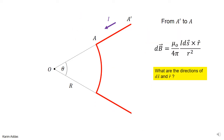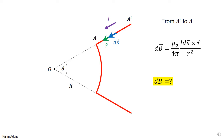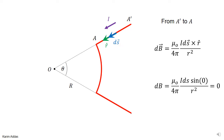We cut the wire into three parts. For the first part, from infinity to the start of the arc, consider ds and r-hat for any element along this straight line. ds points in the direction of the current, and r-hat points from the element toward point O. The angle between them is zero, so the magnitude is μ₀i ds sin(0°)/(4πr²) = 0. None of the elements along this part contribute any magnetic field at point O.